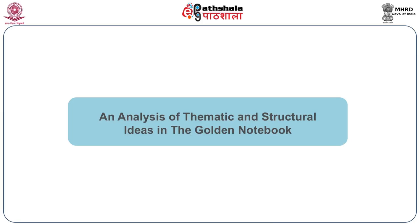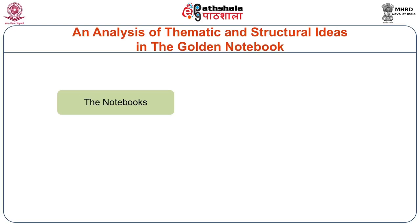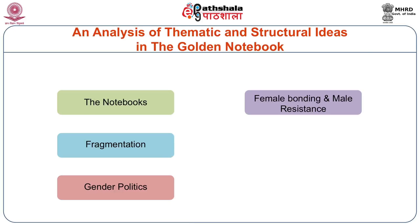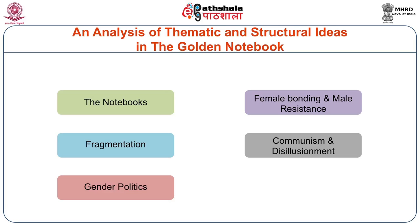We will look first at the themes and then the structure of this novel. There are six things to keep in mind: the idea of the notebooks, the idea of fragmentation, gender politics and female bonding, male resistance, communism and disillusionment, and racial discrimination. These are the six broad areas we will be looking at.